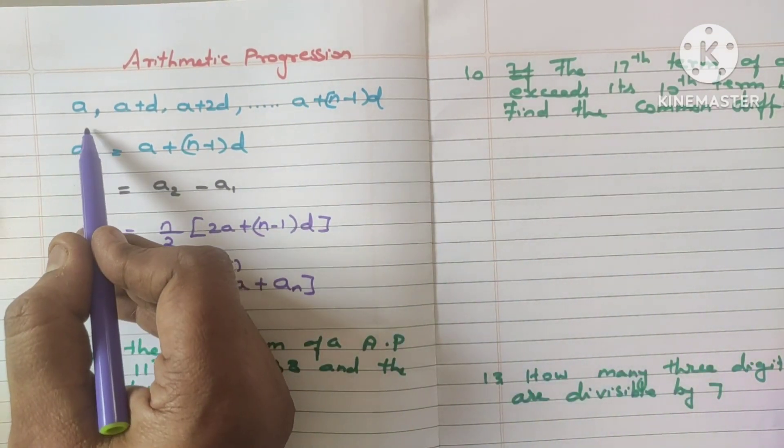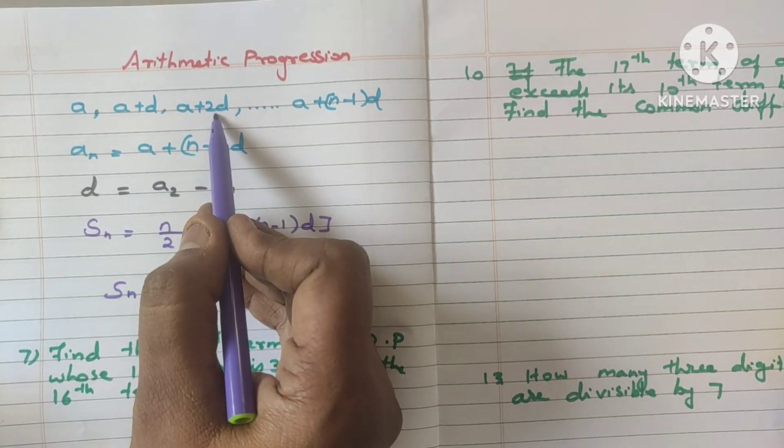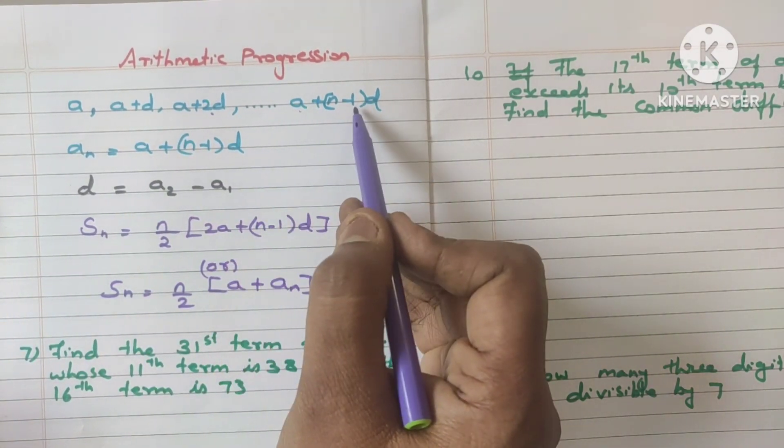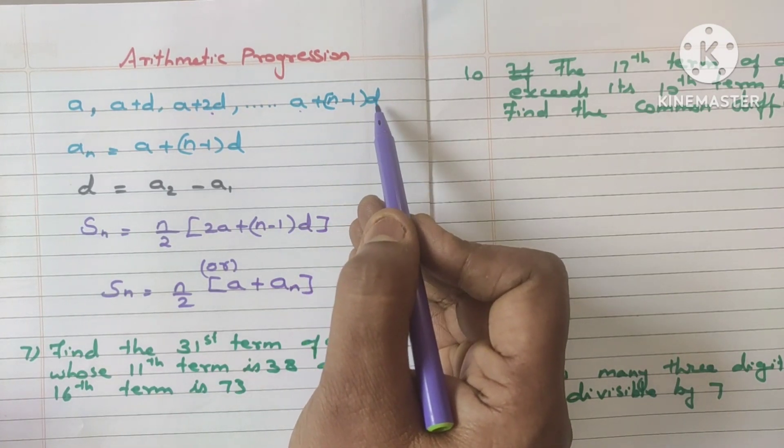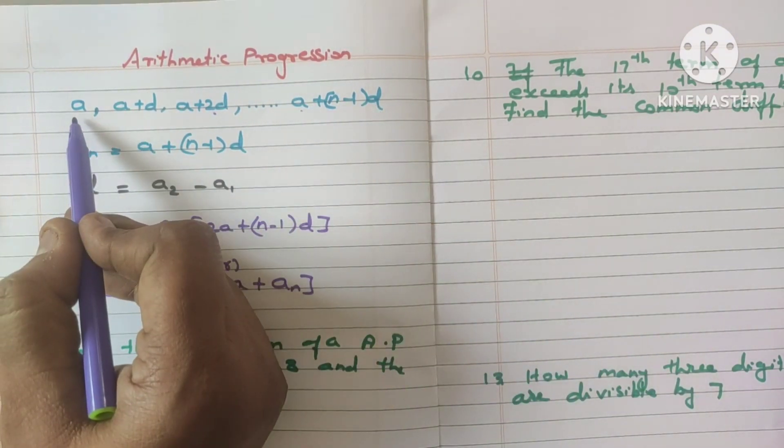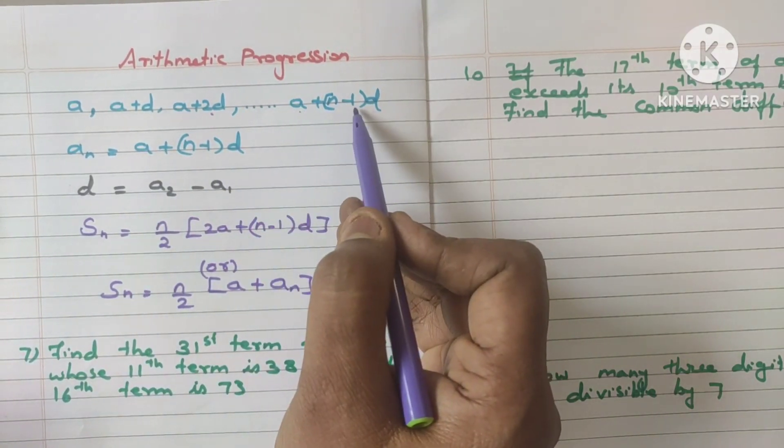The general form of an arithmetic progression is a, a plus d, a plus 2d and so on. The last term is a plus n minus 1 into d. So this is the first term, second term, third term and so on. This is the nth term.